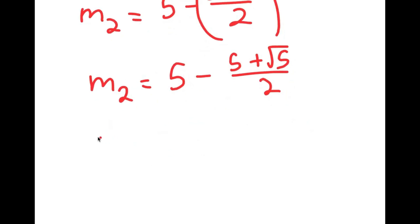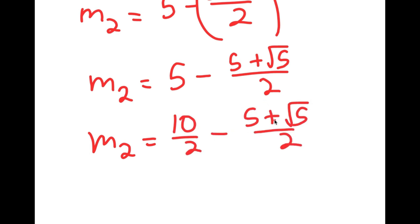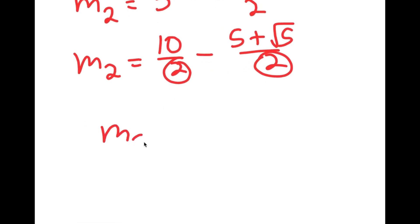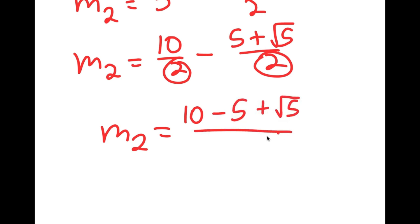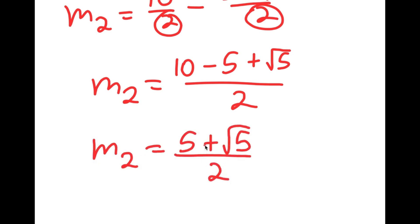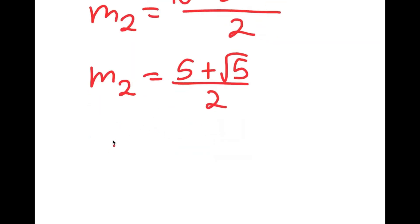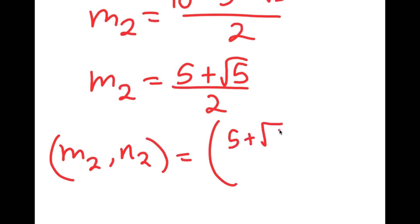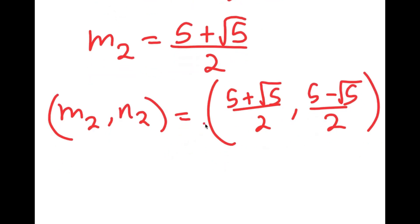Rewriting 5 as 10 over 2, I get 10 over 2 minus 5 plus the square root of 5 over 2. Subtracting fractions with the same denominator gives 10 minus 5 plus the square root of 5, all over 2. Since 10 minus 5 is 5, m2 equals 5 plus the square root of 5 over 2. So my second solution is 5 plus the square root of 5 over 2, comma, 5 minus the square root of 5 over 2.